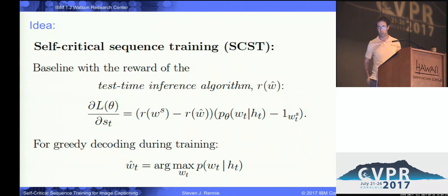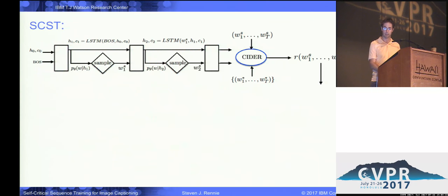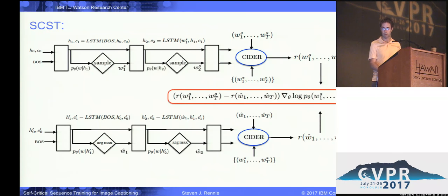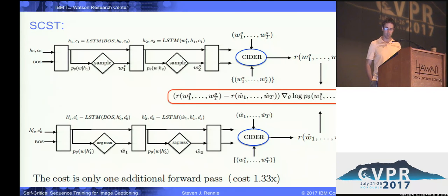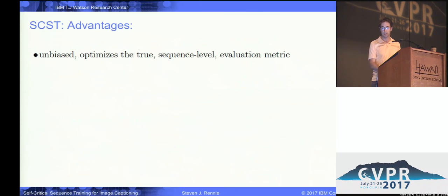We can decode in any way we wish during training. Normally we decode greedily during training because it requires only one additional forward pass. Here's a depiction of what I just described: we sample and feed back the word in the standard LSTM decoder setup. Then we perform a second forward pass according to the inference algorithm — greedy decoding — and normalize the reward accordingly. The additional cost is actually just a factor of one third, and even normalizing out that factor, you still get faster convergence.